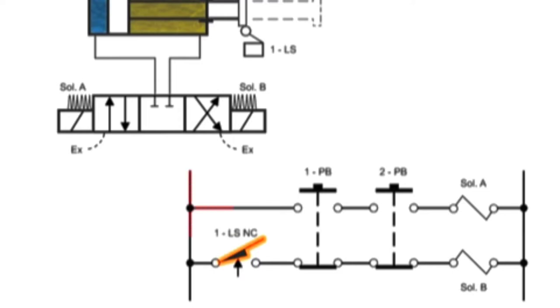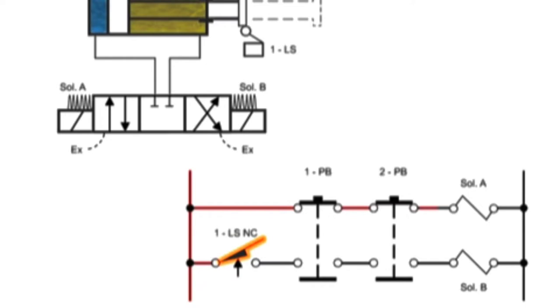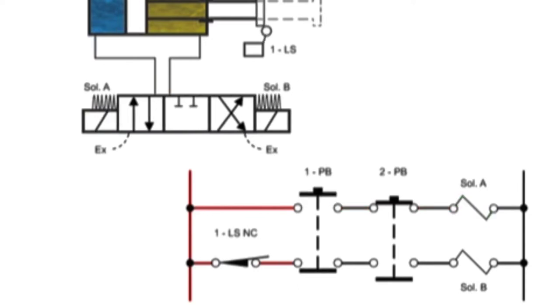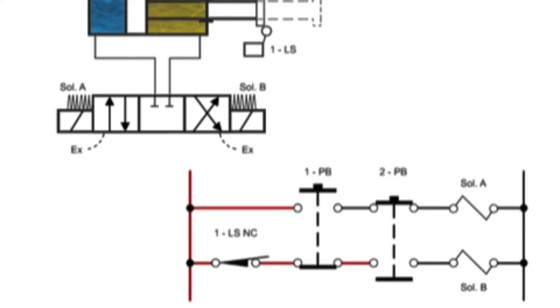Both buttons must be pressed to energize valve solenoid A and start the cylinder forward. When the cylinder begins to move forward, limit switch one is released and goes to its normally closed position. If either button is released, both solenoids de-energize and the springs return the valve to its neutral center position, stopping the movement of the cylinder.